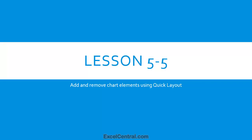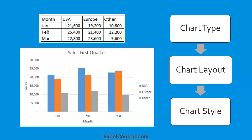This lesson focuses upon Chart Layouts. You'll remember from Lesson 5-1 that there are three major decisions to make when designing a chart: first the Chart Type, then the Chart Layout, the subject of this lesson, which covers the elements the chart contains, and finally the Chart Style, things such as the colors and fonts used on the chart. This lesson focuses completely upon the Chart Layout, the collection of elements that a chart contains.